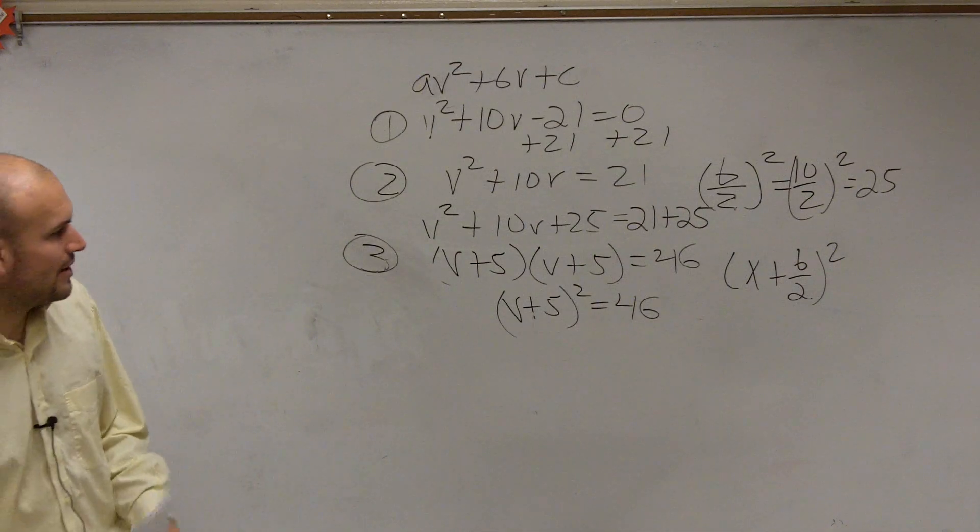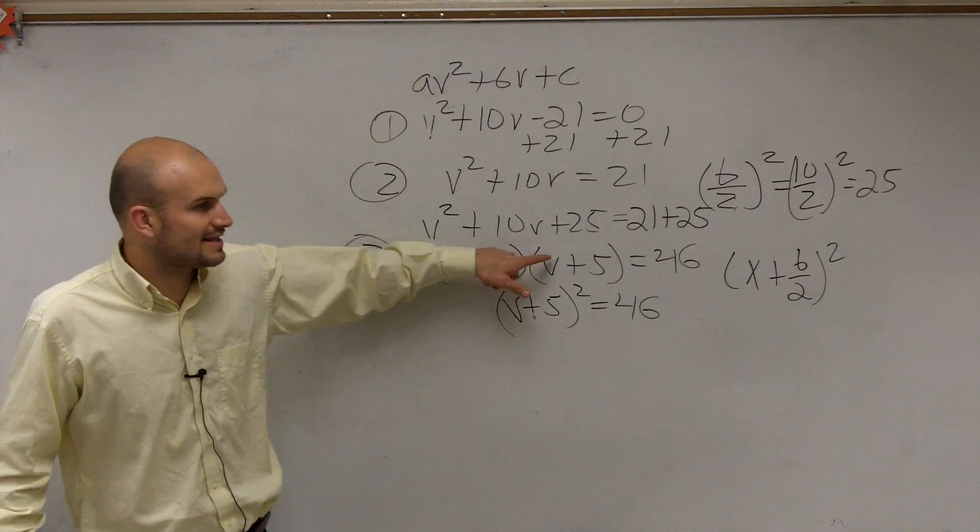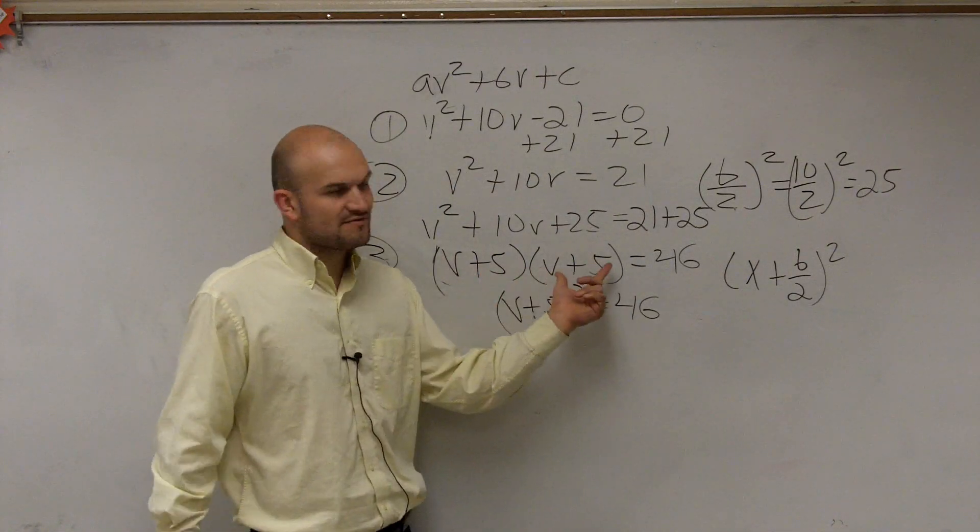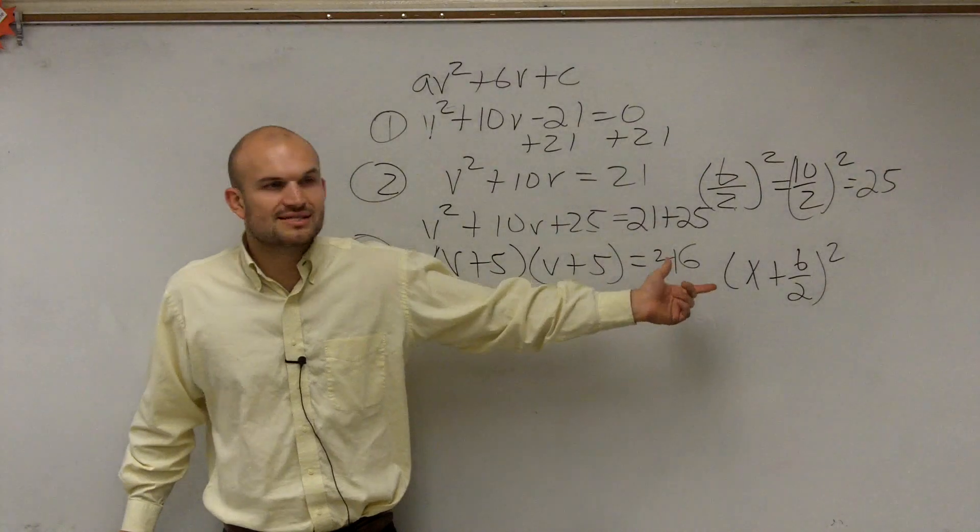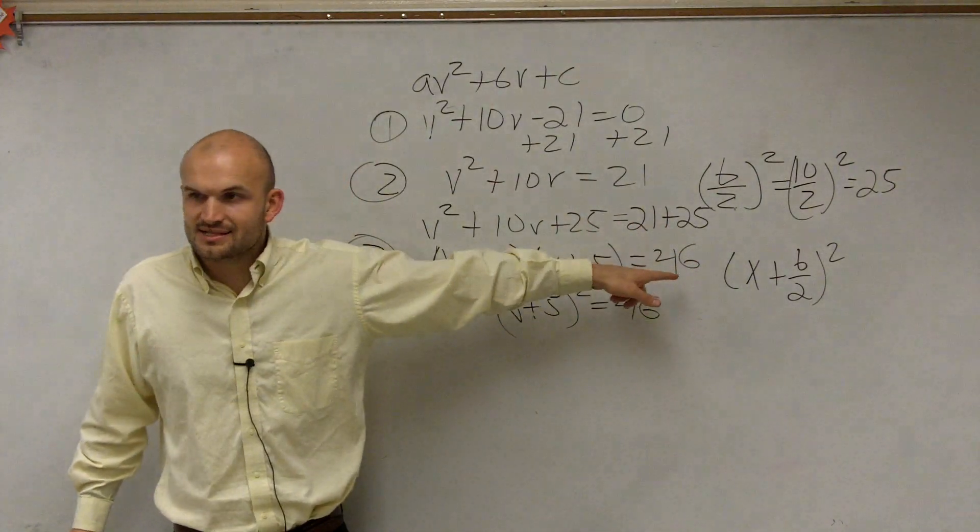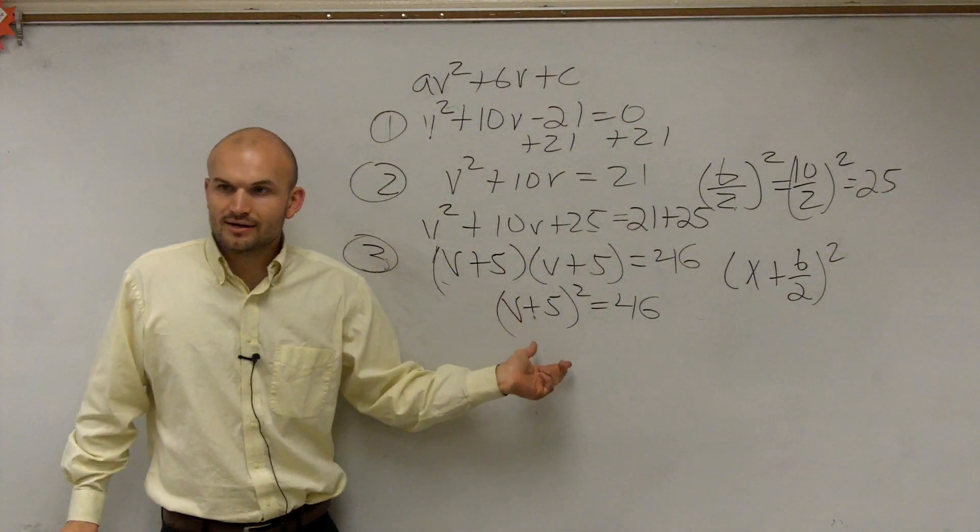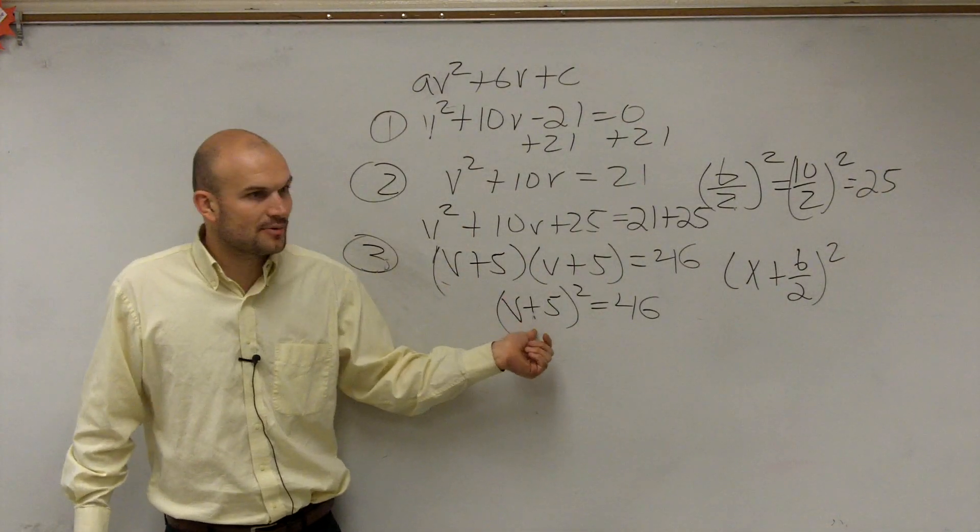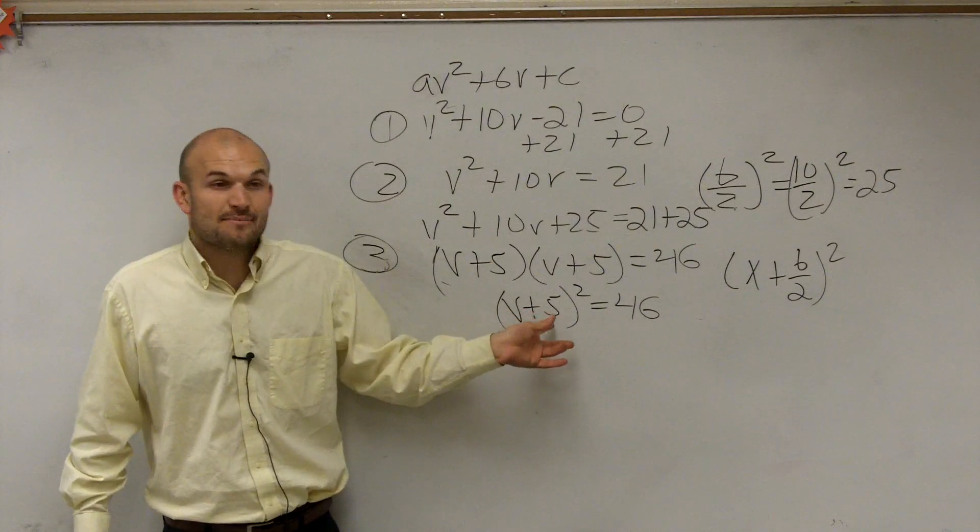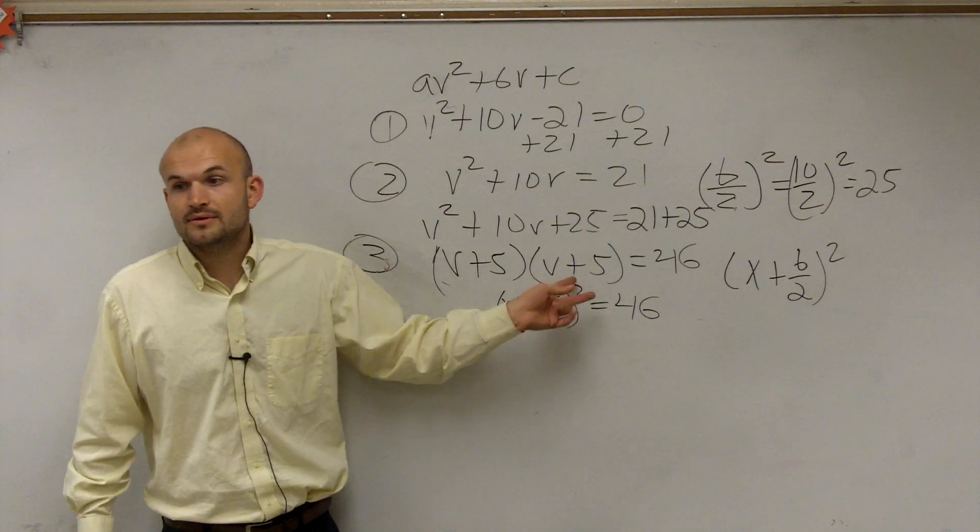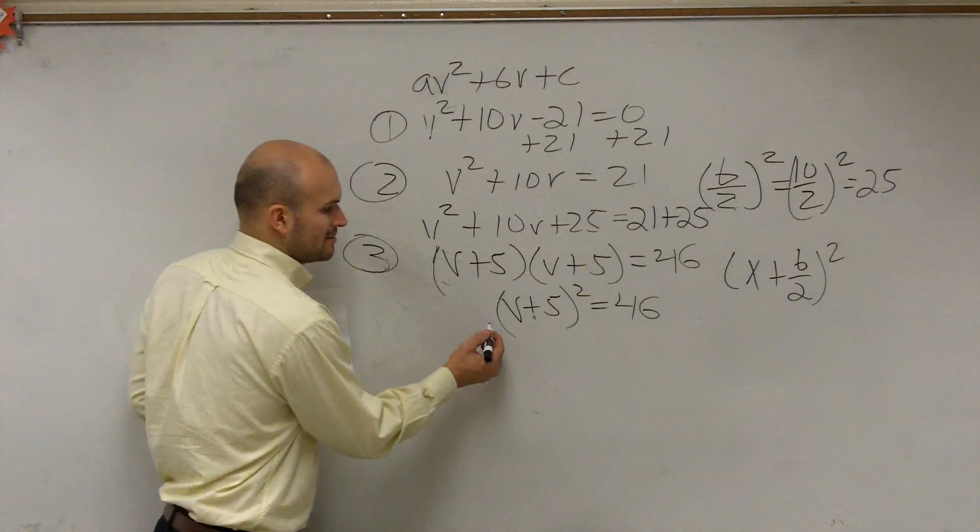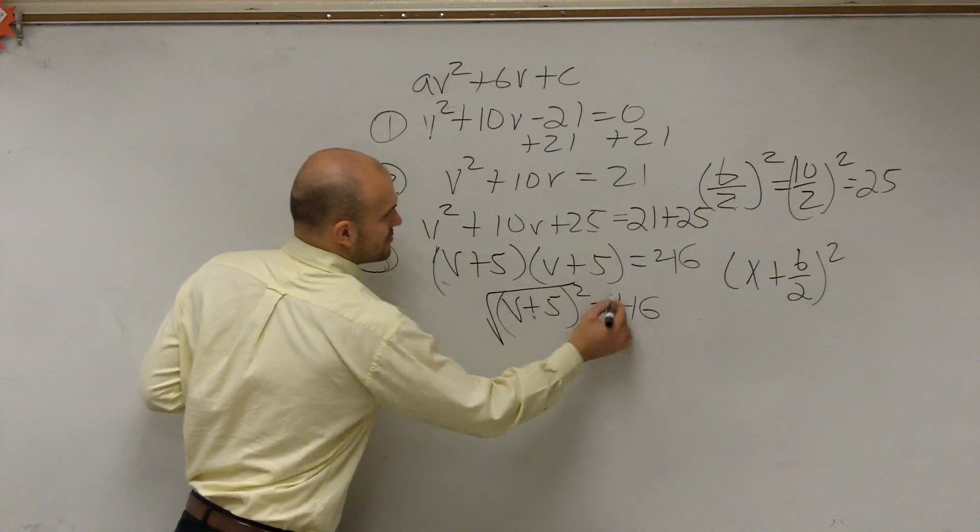So when I come to this point, why is it I want to write it like this and not write it like that? Ladies and gentlemen, this is a great way to solve (v + 5)(v + 5) when it equals 0 because then you just set them both equal to 0. But now they equal 46. So when I rewrite it as a binomial squared, I can now apply my inverse operations. So how do I get v by itself? What's happening to my v? It's being added by 5 and it's also being squared. So guess what? How do you undo squaring? Square root.